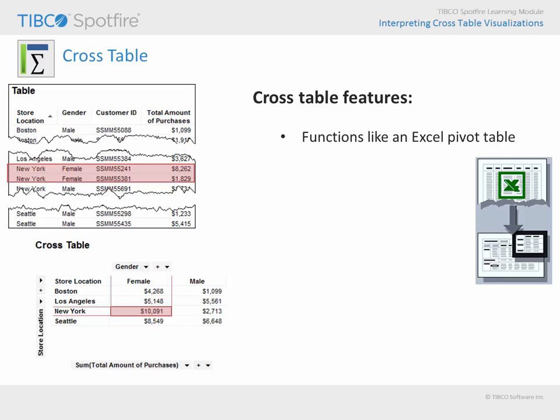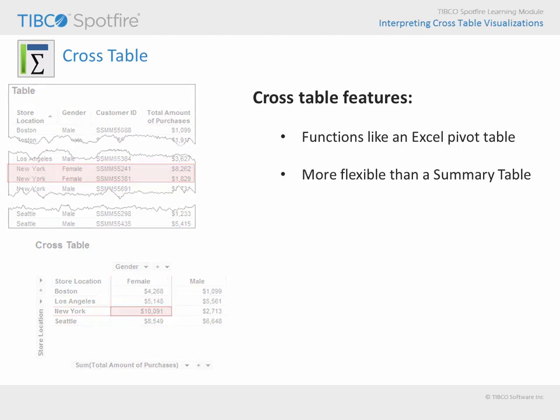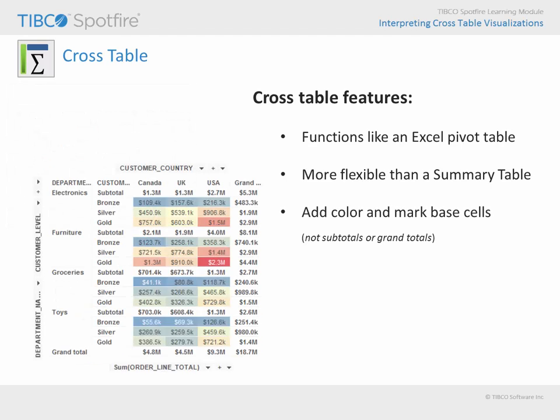Because of this method for grouping data, the crosstable is more flexible than the summary table. You will also notice that cells within the crosstable may be colored in order to draw attention to specific values, and that cells may be marked in order to drill down into values of interest.